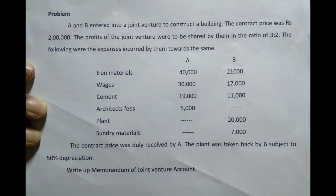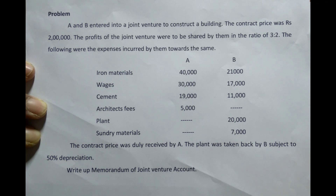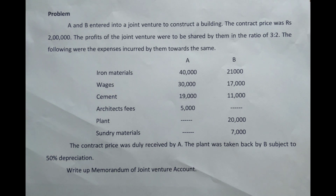Plant supplied by B: Rs. 20,000. Sundry materials supplied by B: Rs. 7,000. The contract price was duly received by A. The plant was taken back by B subject to 50% depreciation. Write up the memorandum joint venture account.